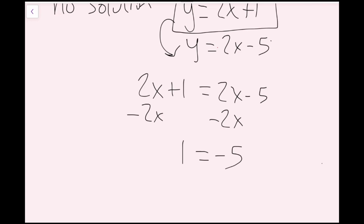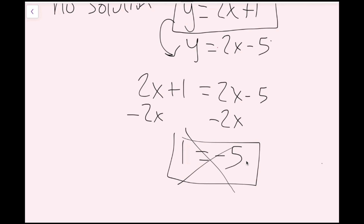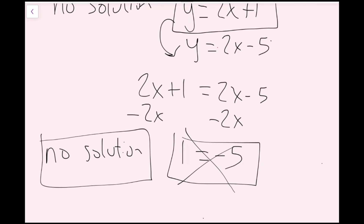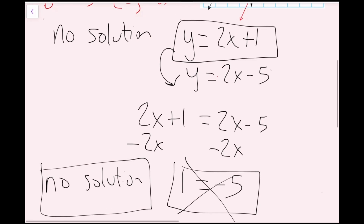Now I just get 1 equals negative 5. This is saying these two lines intersect when 1 is equal to negative 5 — but when is that the case? Never. 1 is never going to equal negative 5, so we reject that. This is another no-solution case. We've solved this in two different ways — by substitution and by graphing — and both ways we get no solution.